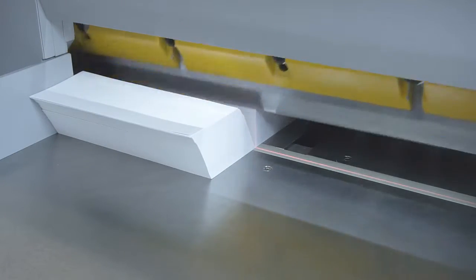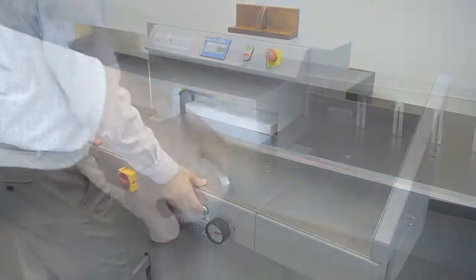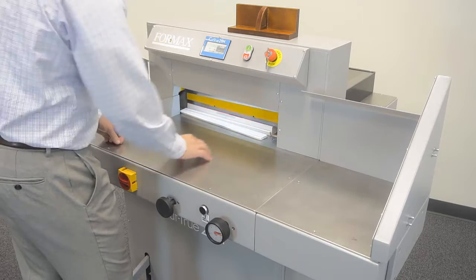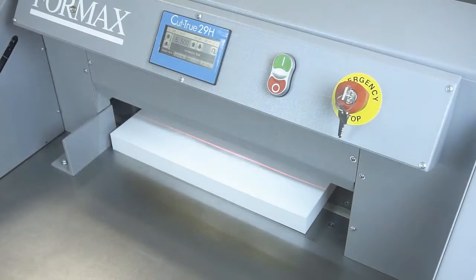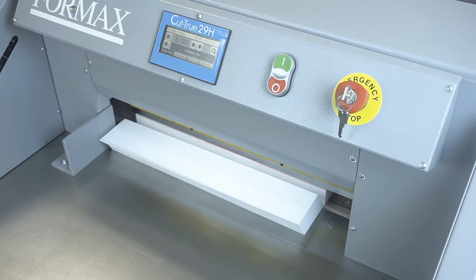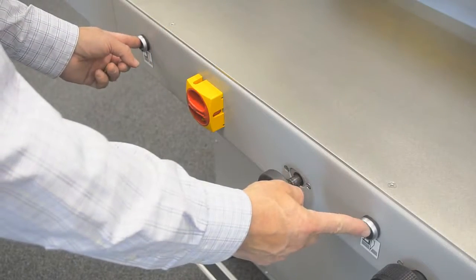The Cut-True 29A and 29H quickly and accurately cut paper stacks up to 3.15 inches high in paper sizes up to 20 inches wide. The bright LED cutting line indicates exactly where the blade will cut, allowing operators to make fine adjustments.